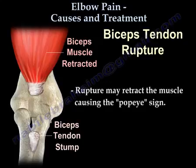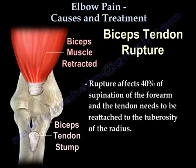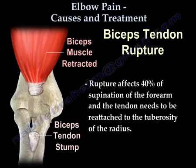The rupture may cause the muscle to retract proximally, sometimes causing the Popeye muscle deformity. The rupture affects 40% of supination of the forearm, and the tendon needs to be reattached to the tuberosity of the radius.